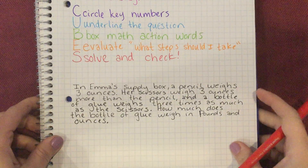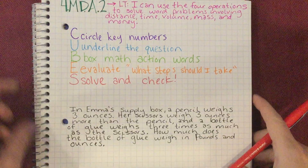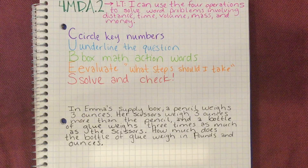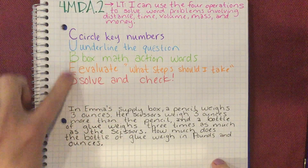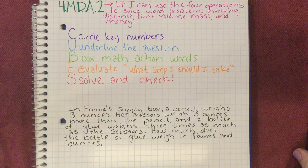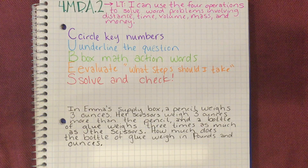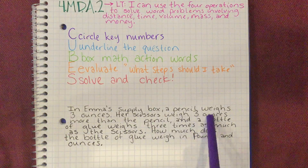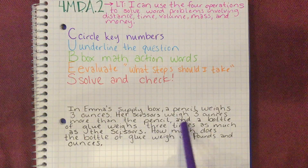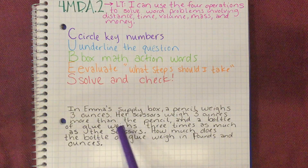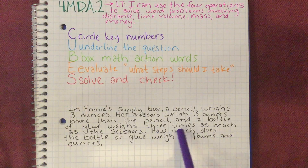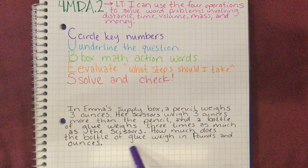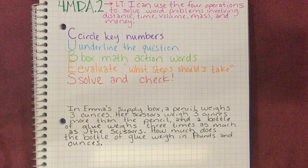Before we apply the CUBES method, we have to read — we always read closely, and maybe that means reading more than once. We're going to read it just once all the way through without annotating yet. In Emma's supply box, a pencil weighs three ounces. Her scissors weigh three ounces more than the pencil. And a bottle of glue weighs three times as much as the scissors. How much does the bottle of glue weigh in pounds and ounces?